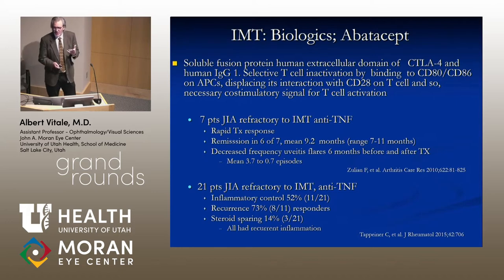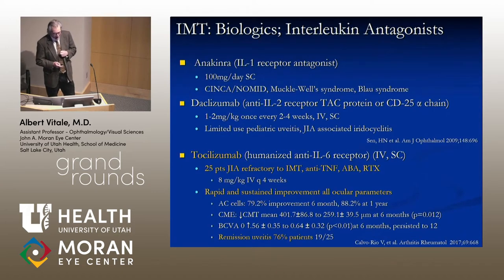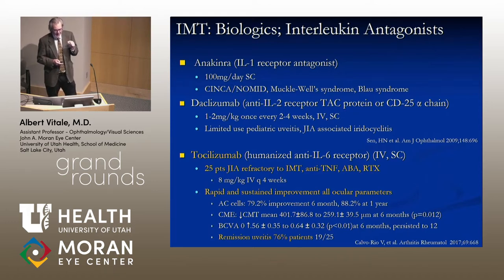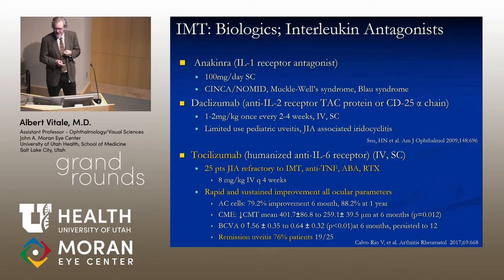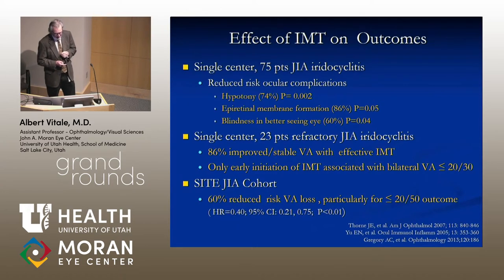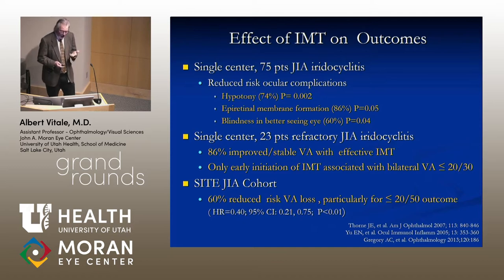There are a whole slew of other biologic agents with little experience in uveitis, but one promising agent is tocilizumab, which has been shown to be quite effective as a third-line agent both in terms of anti-inflammatory efficacy and in the reduction of macular edema. As for outcomes, there are some good retrospective data showing a reduced risk of ocular complications in patients with JIA-associated iridocyclitis.